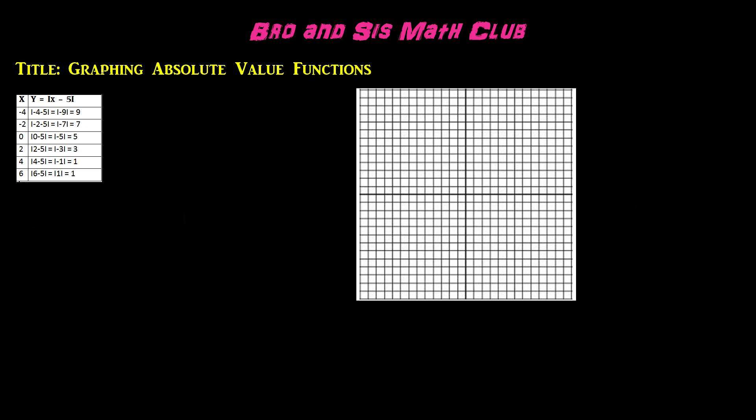Absolute value is how far a number is from zero on a number line. Let's go ahead and do an example of absolute value to understand it better.